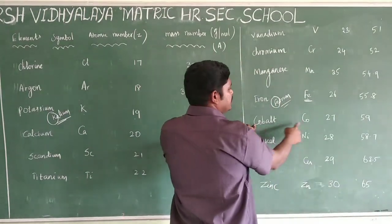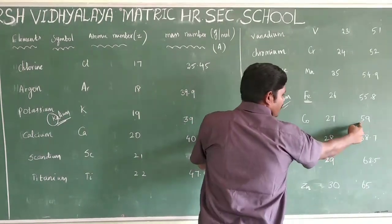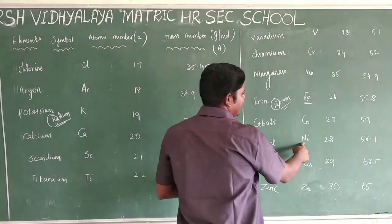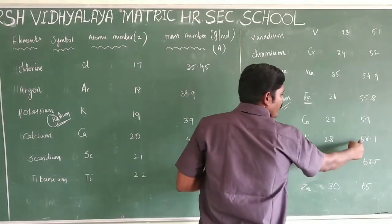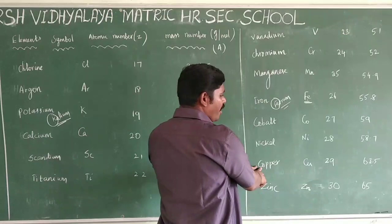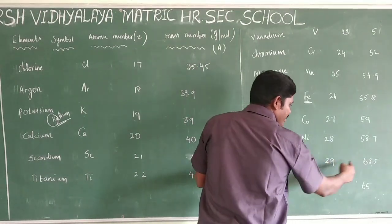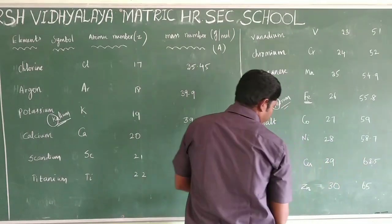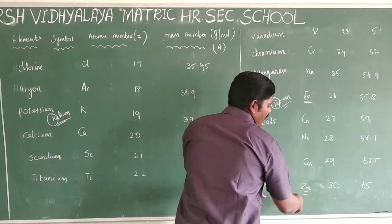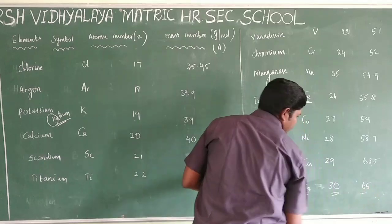Cobalt, symbol Co: atomic number 27, mass number 59. Nickel, symbol Ni: atomic number 28, mass number 58.7. Copper, symbol Cu: atomic number 29, mass number 63.5. Zinc, symbol Zn: atomic number 30, mass number 65.